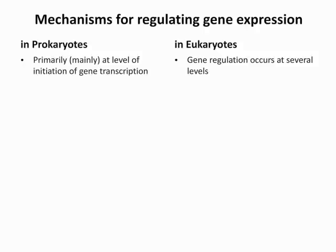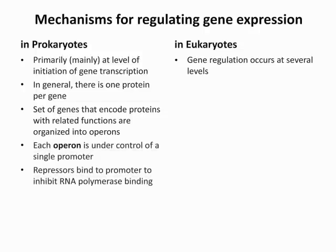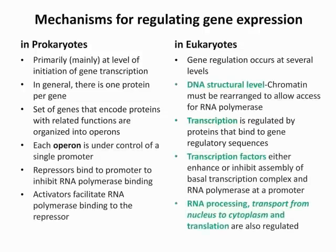Our first learning objective is knowing the mechanism for regulating gene expression in prokaryotes and eukaryotes. You should have a good idea of the main differences between the two — this would be a good slide to memorize. In prokaryotes, regulation of gene expression mainly happens at the level of initiation, whereas in eukaryotes, gene regulation occurs at several different levels.